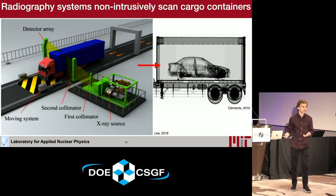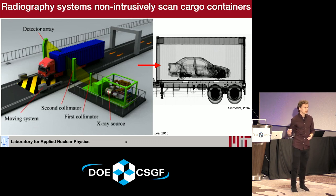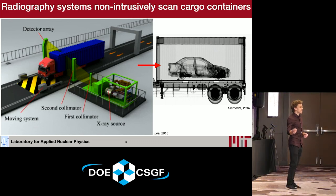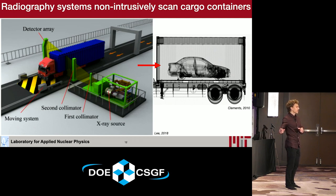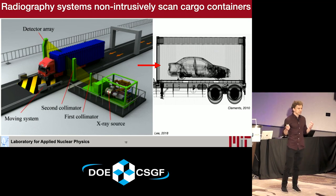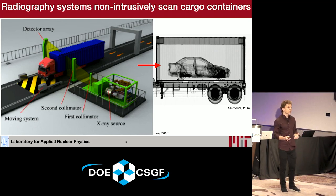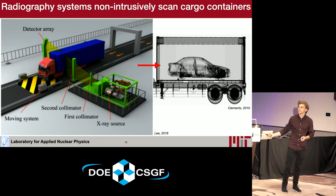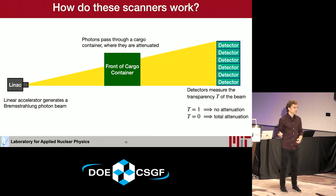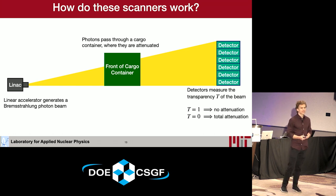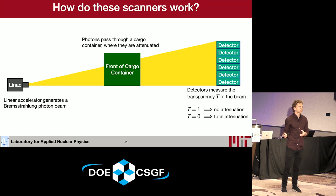Here's a picture of what these systems look like. You have a photon source that generates an X-ray beam, shaped into a fan beam that passes through a cargo container. There's a stack of detectors on the far side that measures the photon beam. The cargo container drives through the beam, producing a 2D density image. What the detectors are actually measuring is the transparency of the photon beam — a transparency of 1 means no attenuation, and a transparency of 0 means total attenuation from a large, thick container.